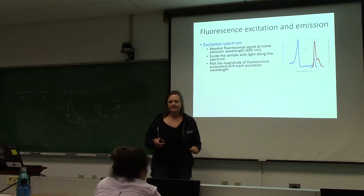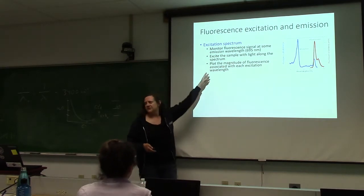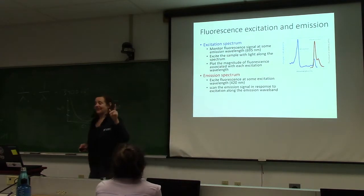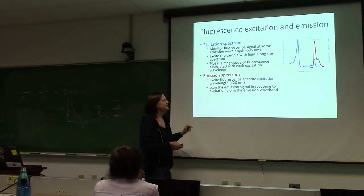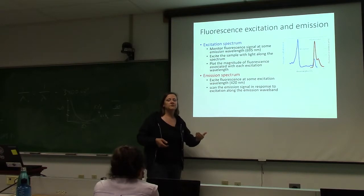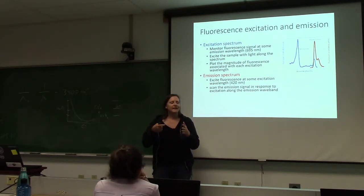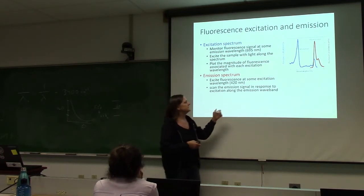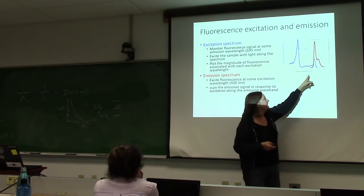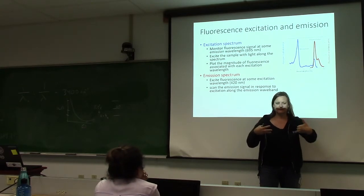We're talking about chlorophyll A right now. For the emission spectrum, you put your sample in the chamber, excite it at a wavelength you know it absorbs efficiently — maybe 430 nm — and then scan the light emitted on the other side. You have light coming in and light going out. You can change the excitation wavelength or the emission wavelength, but not at the same time — or it'd be a pain to deconvolve.